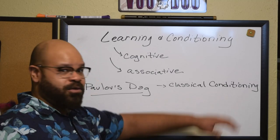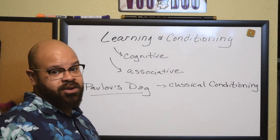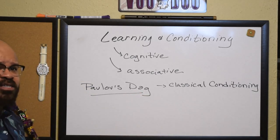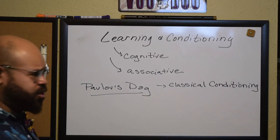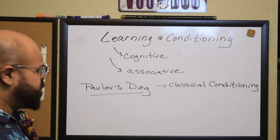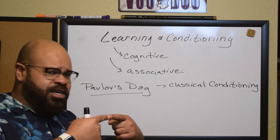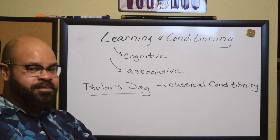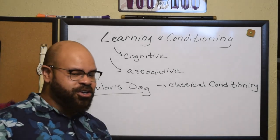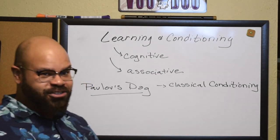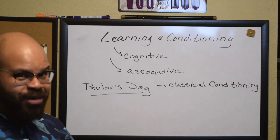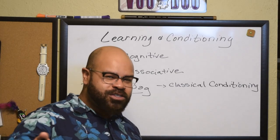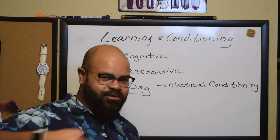So Pavlov's dog has this really famous experiment with regard to classical conditioning. Classical conditioning is about learning that two things go together in such a way that when one happens, you expect the other. Now, this expectation is physical and unconscious. You may also cognitively expect something, but generally you've taught yourself through that associative learning — you can feel yourself get excited, get nervous, because you're expecting something physically.